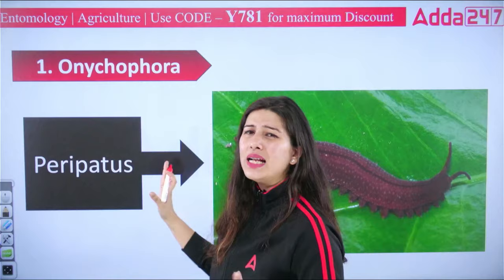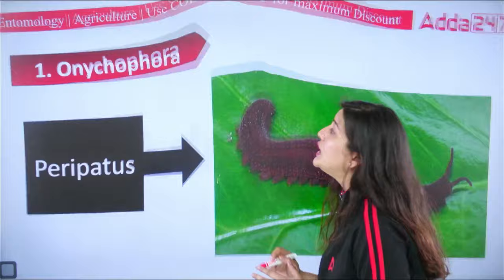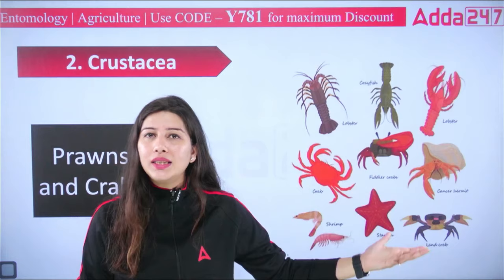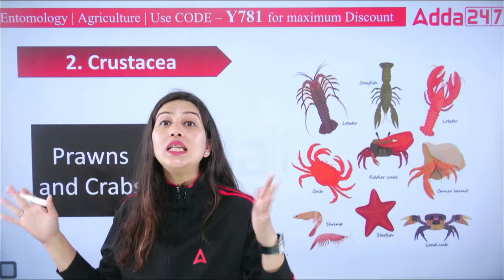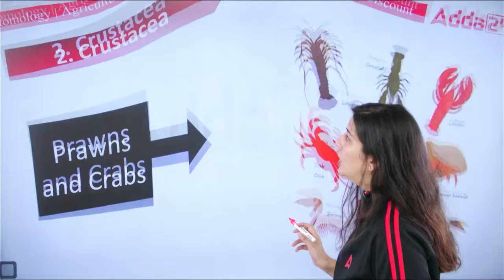The first class, Onychophora, includes Peripatus — not important from an agriculture point of view. The second class is Crustacea — prawns, crabs, etc. These do not cause crop damage; they are seafood. From an agricultural perspective, these are not very significant classes.